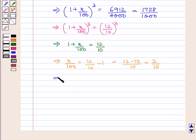This implies R is equal to 2 upon 10 into 100 which equals 20. Therefore R is equal to 20% half yearly.